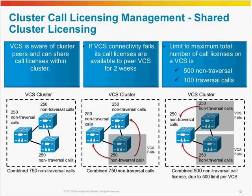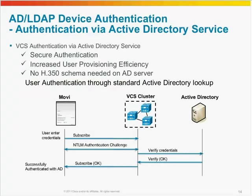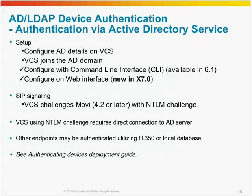The next important new feature is AD LDAP device authentication. When you join the VCS to the domain and enable authentication via Active Directory service, you will gain secure authentication, increased user provisioning efficiency, and you won't need to use an H.350 schema on your AD server. With this solution, the VCS will only challenge the password with NTLM towards the Active Directory server. In X6.1, the AD integration was only configurable in the command line interface. In X7, it's now in the web interface to make deployment even easier. Movi is the only SIP device for now that supports NTLM challenges. Other endpoints still need to use a local database or another LDAP database for authentication. For the future, there will be more devices that support this.